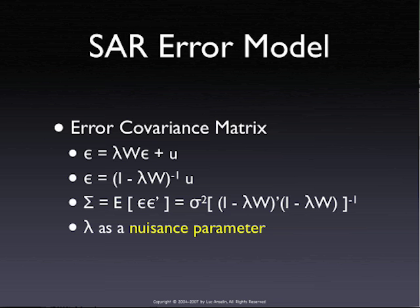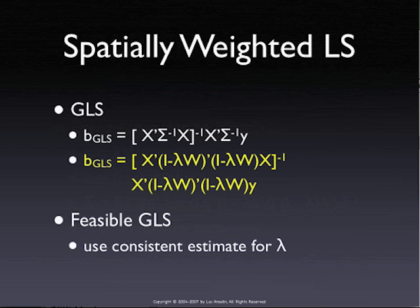You might be able to do better if the estimate is efficient as well, but that's not the main requirement. So we end up with our spatially weighted least squares, which, if we look at the generalized least squares expression, is: x-prime sigma-inverse x, all inverted, times x-prime sigma-inverse y. In the spatial case, we substitute: sigma-inverse equals (I minus lambda W)' (I minus lambda W).